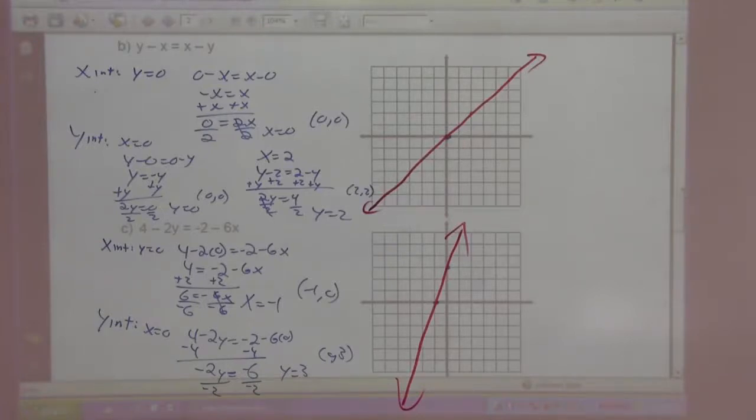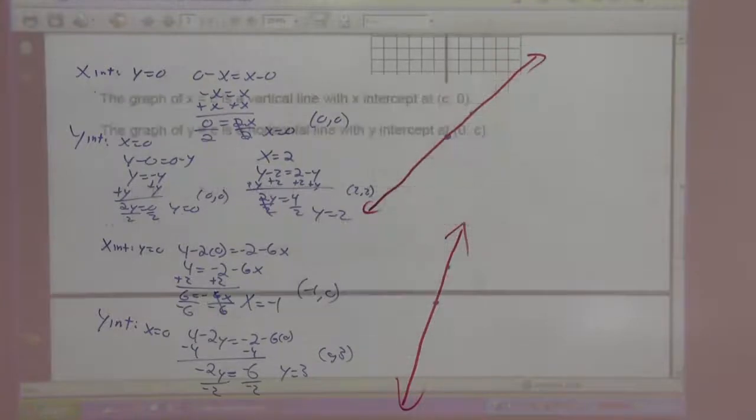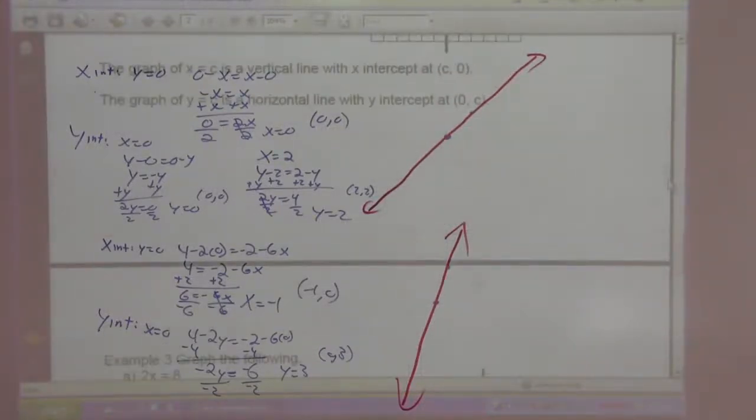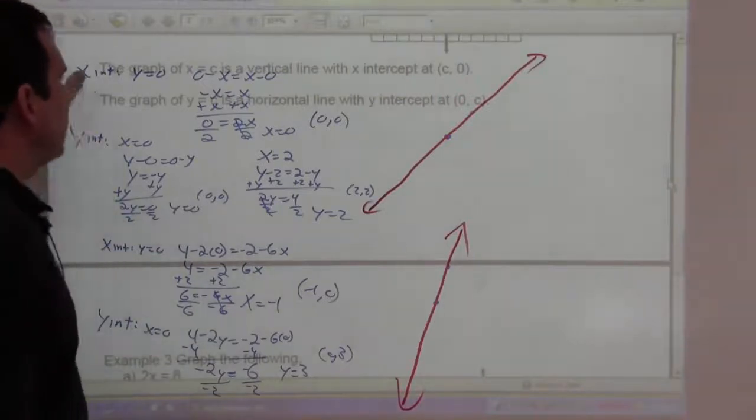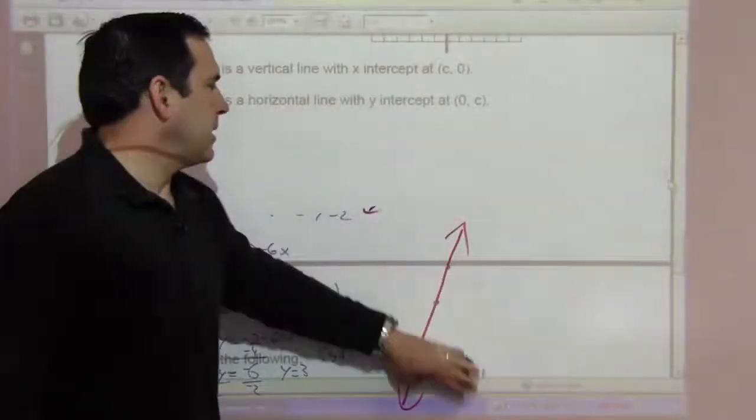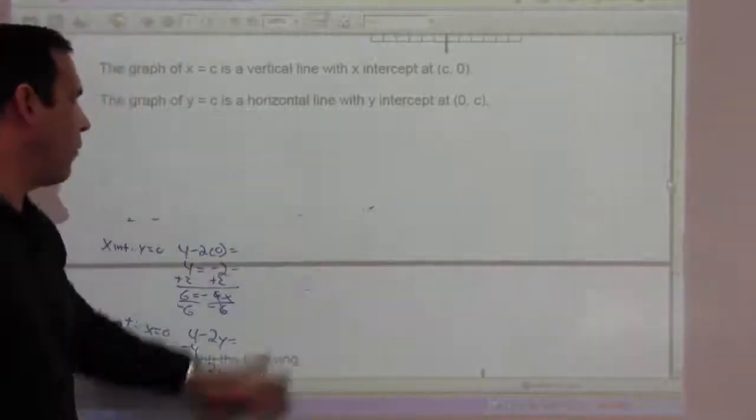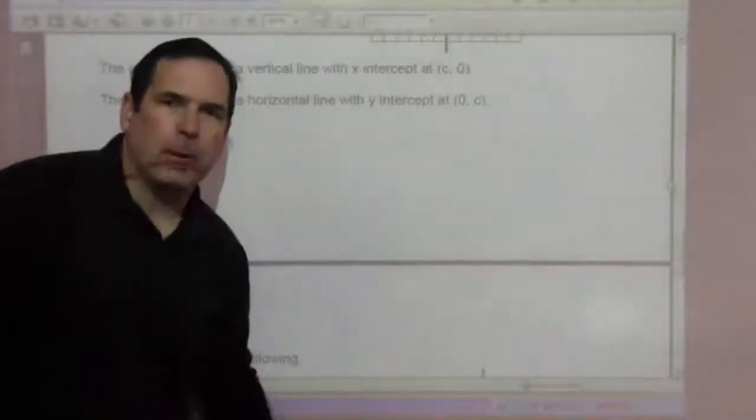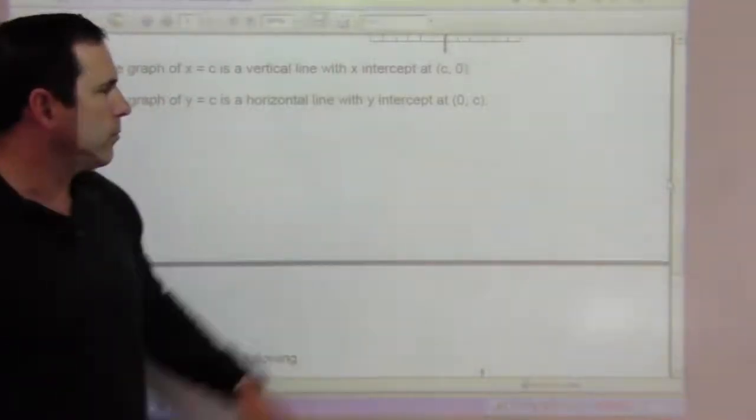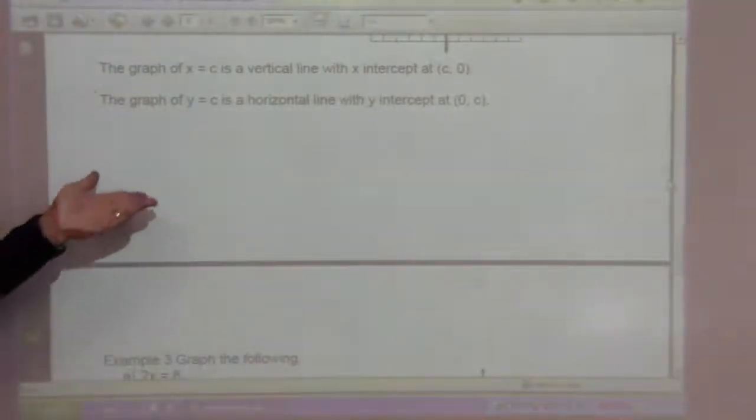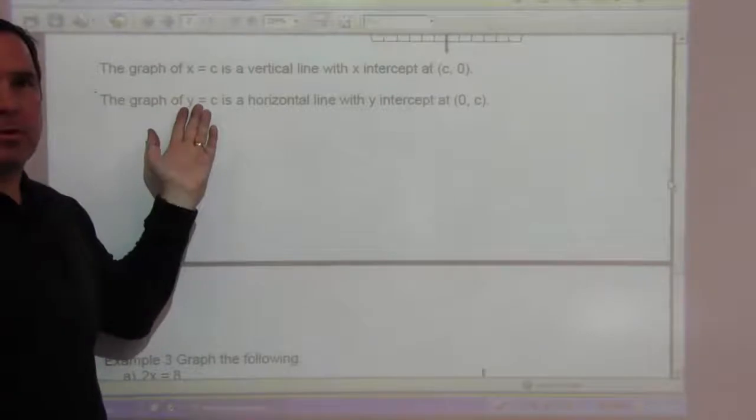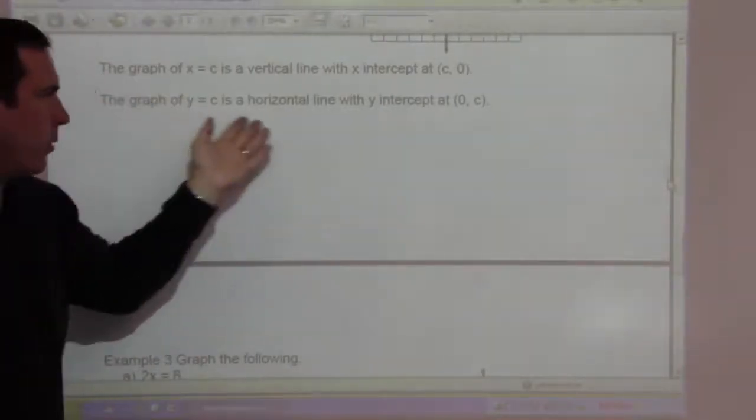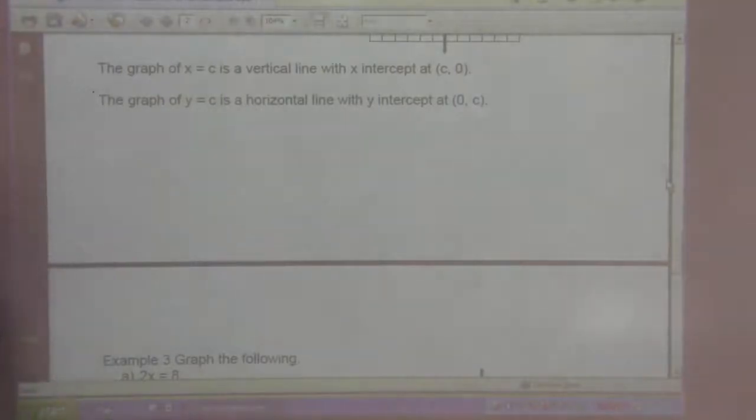I'm going to move on here. The graph of x equals c is a vertical line with the x-intercept at c, 0. And the graph of y equals c is a horizontal line with the y-intercept at 0, c. A little counterintuitive. People think y equals something should be a vertical line because y has a vertical axis, but no. It's a horizontal line. x equals a number is a vertical line.